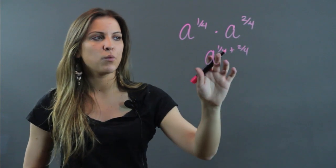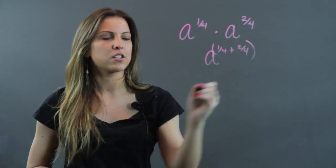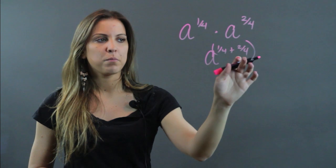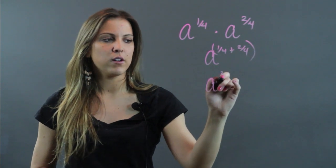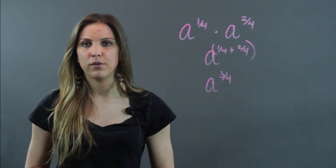So I'm doing a to the 1/4 plus 2/4ths, and actually that should go in parentheses. So 1/4 plus 2/4ths is 3/4ths, and that becomes a to the 3/4ths power.